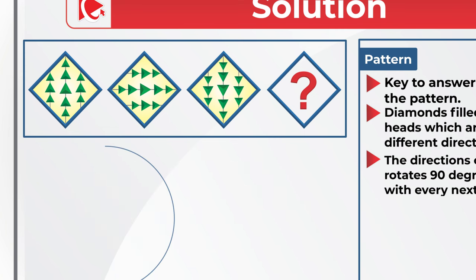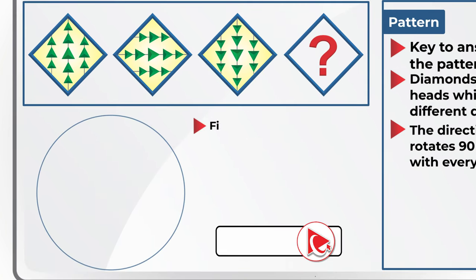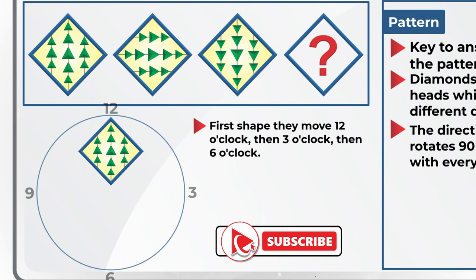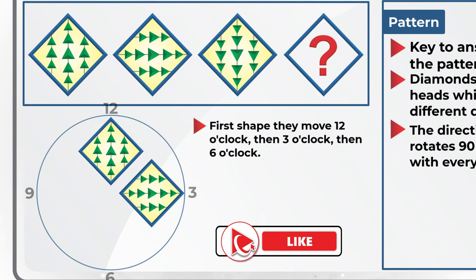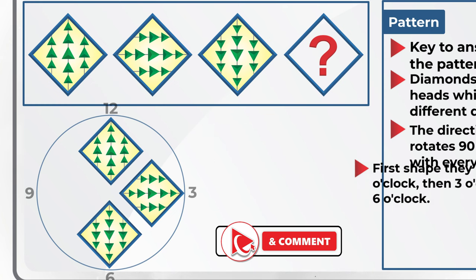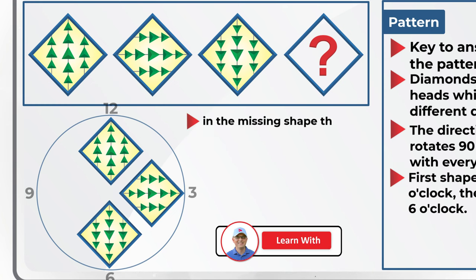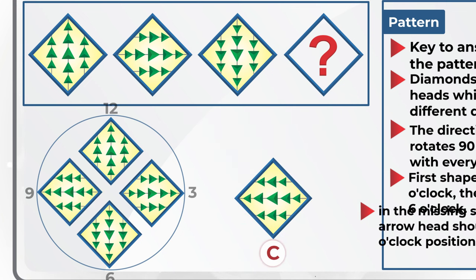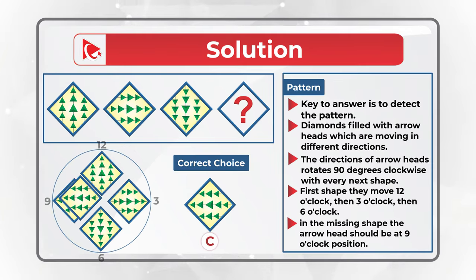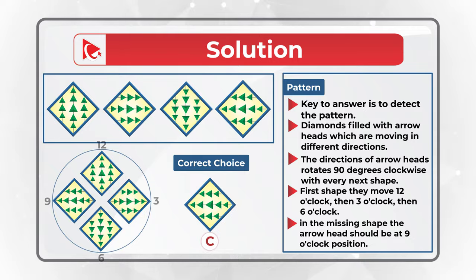For example, in the first shape the arrowheads point to the 12 o'clock position, then they move to the 3 o'clock position, then to the 6 o'clock position. So in the missing shape, the arrowheads should be at the 9 o'clock position. Hopefully you've nailed this question and now know how to answer similar problems on the test.